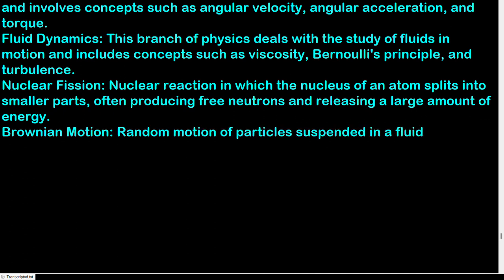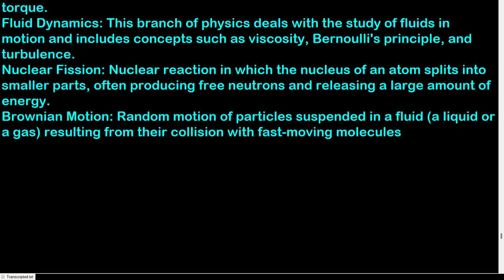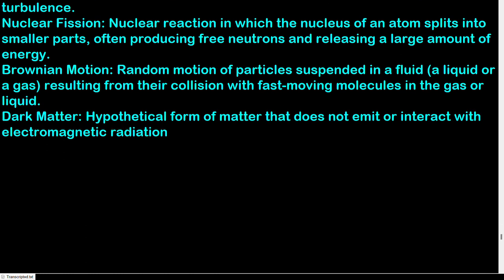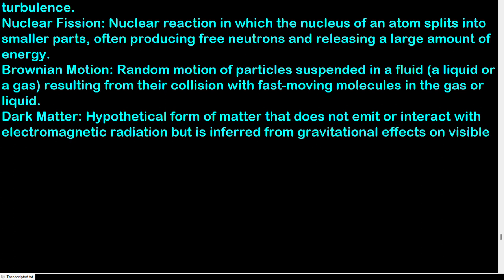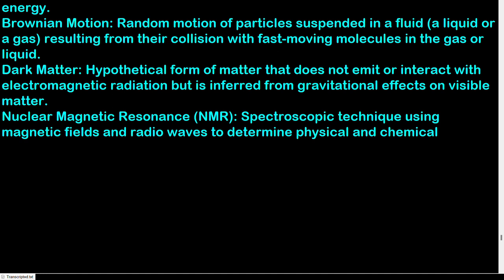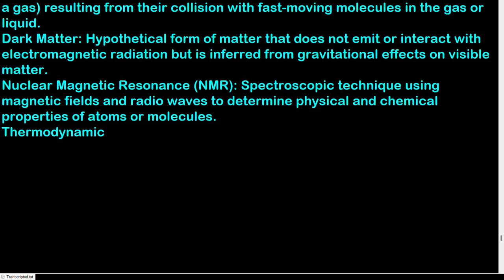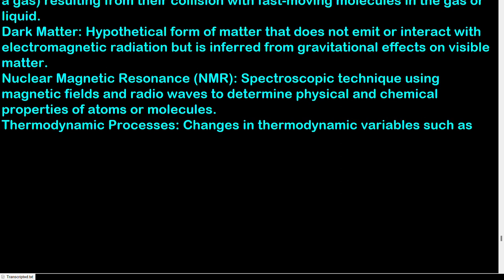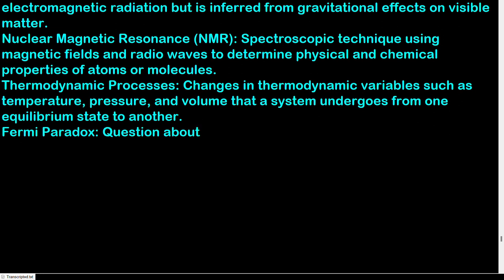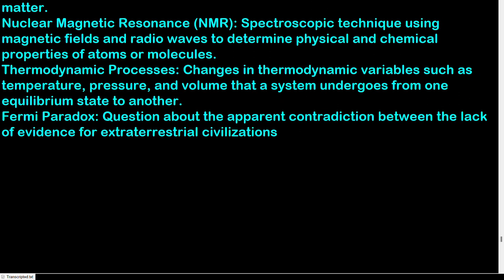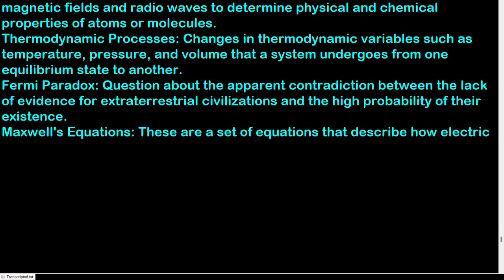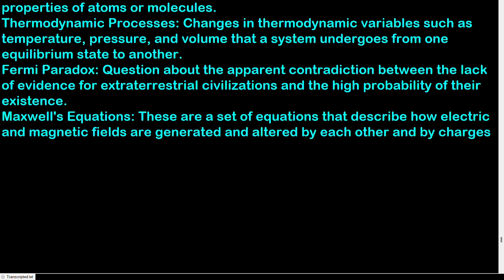Brownian motion: random motion of particles suspended in a fluid resulting from their collision with fast-moving molecules in the gas or liquid. Dark matter: hypothetical form of matter that does not emit or interact with electromagnetic radiation but is inferred from gravitational effects on visible matter. Nuclear magnetic resonance (NMR): spectroscopic technique using magnetic fields and radio waves to determine physical and chemical properties of atoms or molecules. Thermodynamic processes: changes in thermodynamic variables such as temperature, pressure, and volume that a system undergoes from one equilibrium state to another. Fermi paradox: question about the apparent contradiction between the lack of evidence for extraterrestrial civilizations and the high probability of their existence. Maxwell's equations: a set of equations that describe how electric and magnetic fields are generated and altered by each other and by charges and currents.